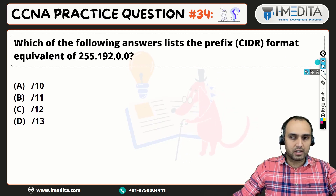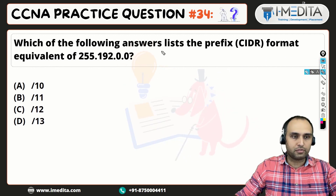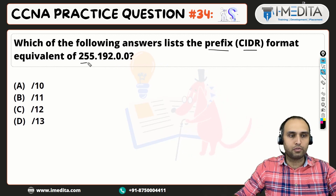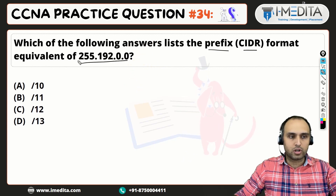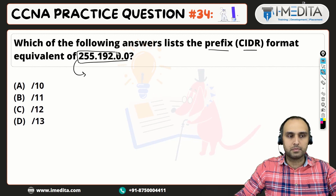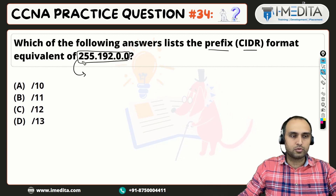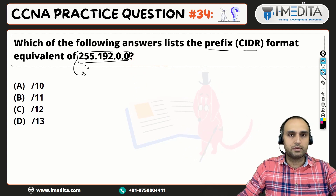In the question, which of the following answer lists the prefix CIDR format equivalent of 255.192.0.0? We have our subnet mask here, written in dotted decimal notation, and we have to write it in slash notation. So, obviously, we need to do binary to decimal conversion.